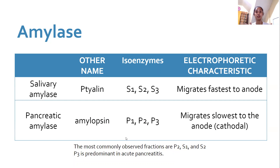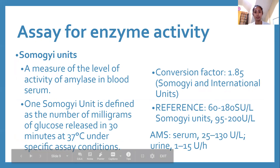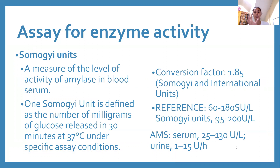P3 is predominant in cases of acute pancreatitis. In testing, Somogyi units are sometimes used for amylase. One Somogyi unit is defined as the number of milligrams of glucose released in 30 minutes at 37 degrees Celsius. Since the product of amylase activity is glucose, the activity is measured by the amount of glucose produced.